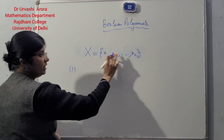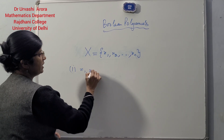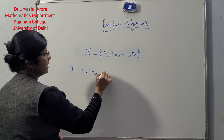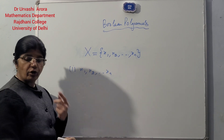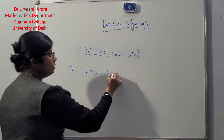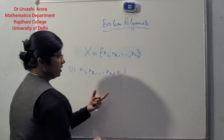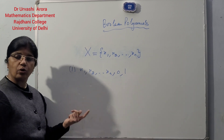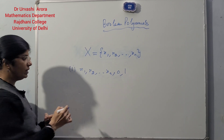The first thing is that all these n symbols x1, x2, and so on till xn are themselves Boolean polynomials by definition. Also, the symbols 0 and 1 are also Boolean polynomials.